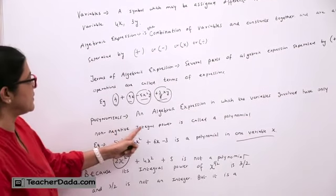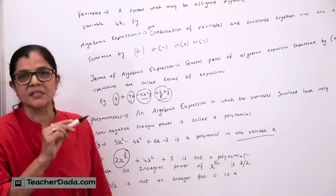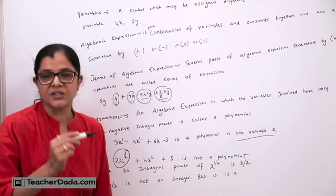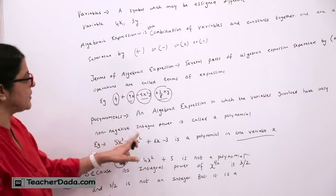Whereas it is a non-negative integral power. If I take 3 upon 2, it will come in a decimal sign or a fraction. So we cannot take the decimal and a fraction. It has to be a non-negative integral power.